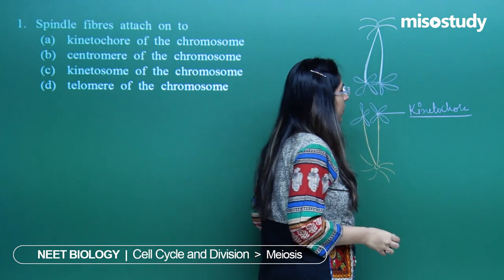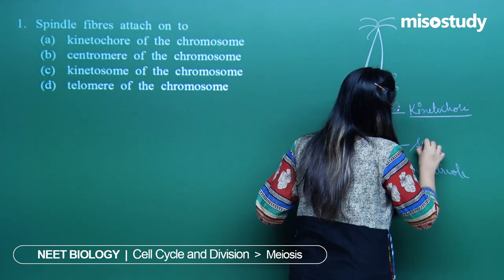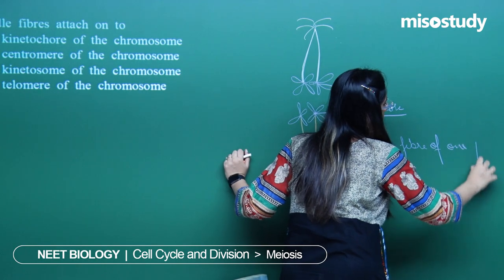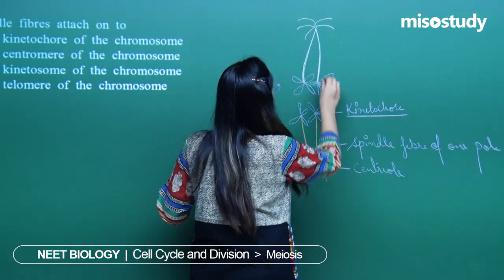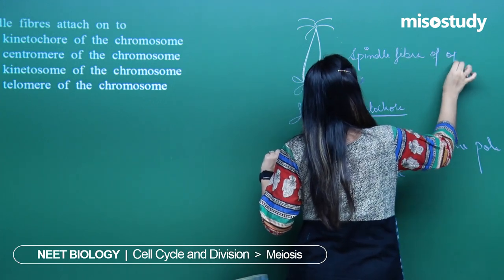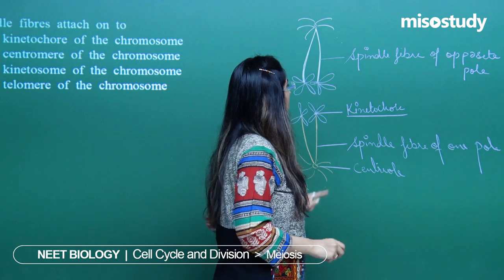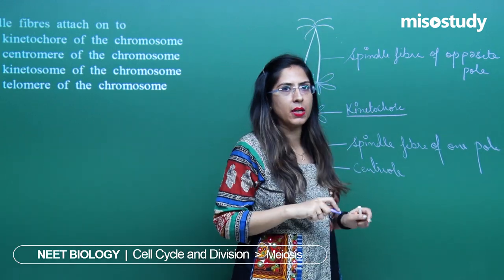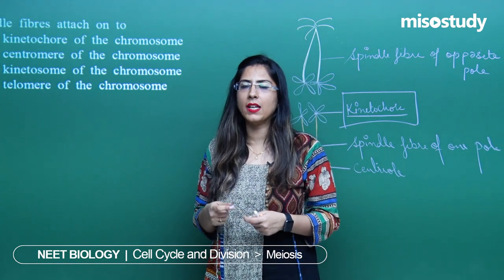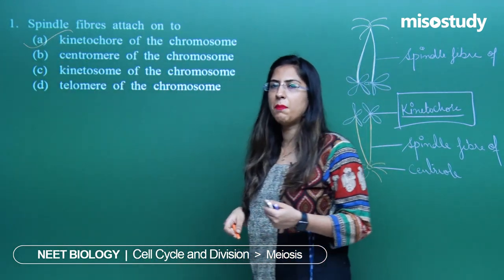In the chromosome, the kinetochore region is present. These are the centrioles; these are the spindle fibers of one pole, and these are the spindle fibers of the opposite kinetochore. This centriole is present at the other end and all are enclosed in the membrane. Kinetochore is that region at which the chromosome attaches itself to the spindle fiber. The correct option is option A for the first question.